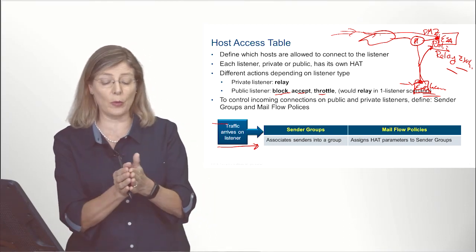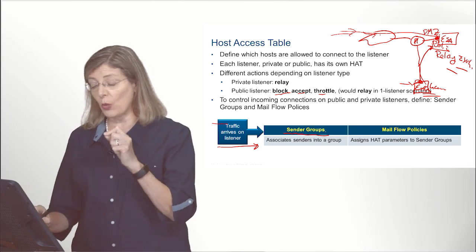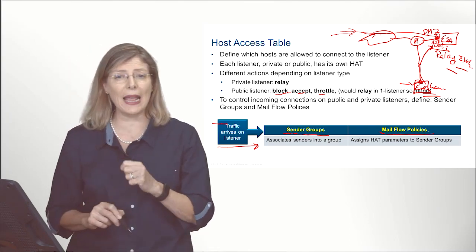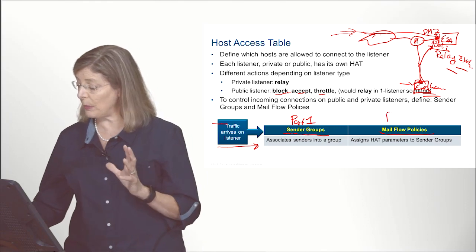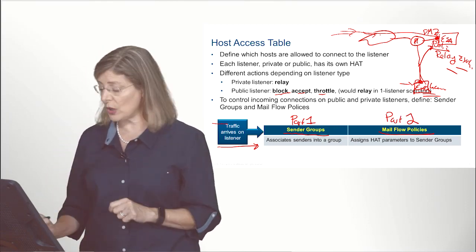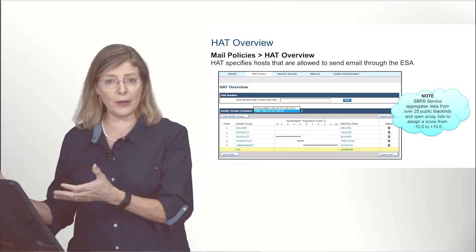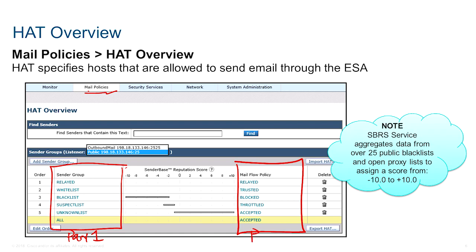When traffic arrives in the HAT, the first thing that happens during the three-way TCP handshake is that the traffic gets assigned to a sender group. Attached to that sender group is what we call a mail flow policy. As mentioned, HAT is a large topic, so I decided to separate it into two portions. What we're going to talk about now is the sender group. Here we can see the figure from Mail Policy under HAT Overview — you get to see the sender groups, which is what we'll discuss in part one.